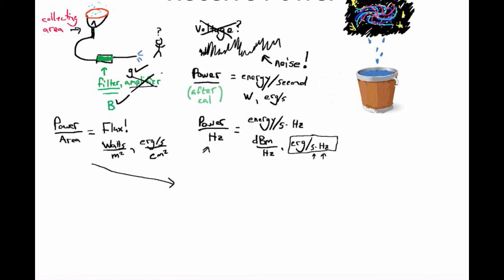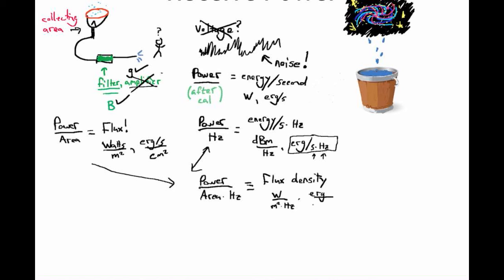This is sometimes called a flux density. Units for flux density are things like watts per meter squared per hertz, or ergs per second per hertz per centimeter squared. But it turns out if you go and make measurements on the sky, you're going to get very small numbers typically when observing some source.